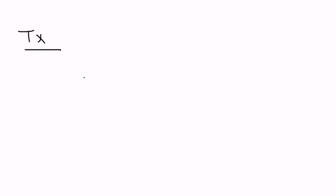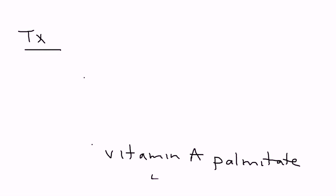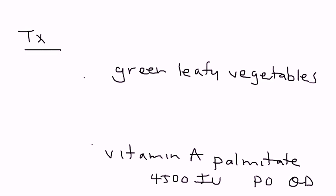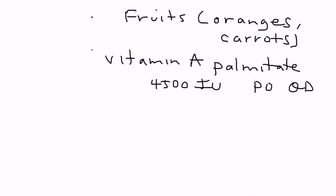In terms of treatment, it's a combination of replacement with vitamin A — in particular, vitamin A palmitate, given 4,500 international units orally every day. And then, of course, you encourage the patient to eat foods high in vitamin A, such as leafy green vegetables and fruits such as oranges and carrots.